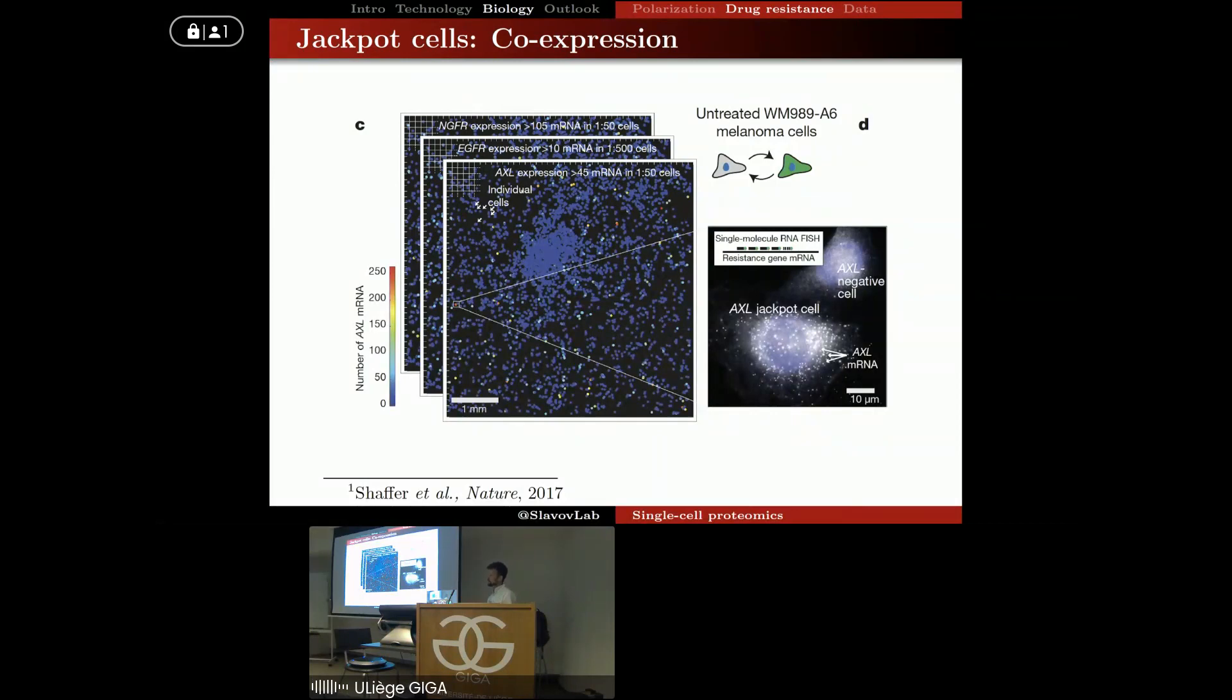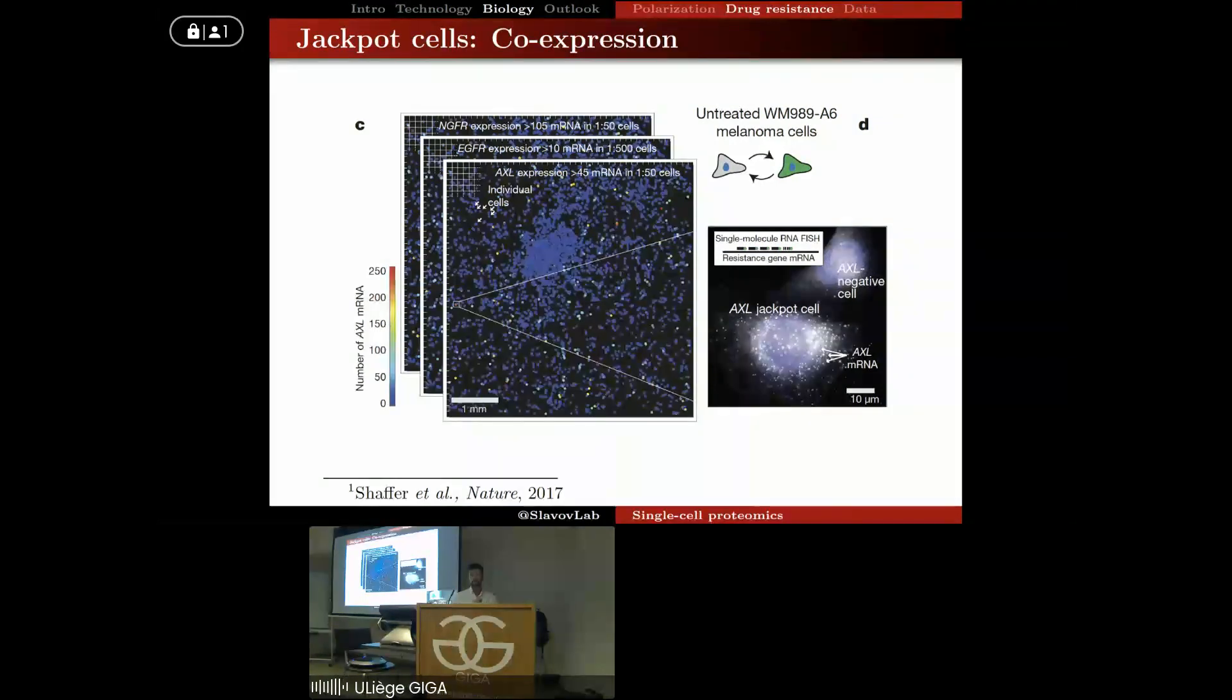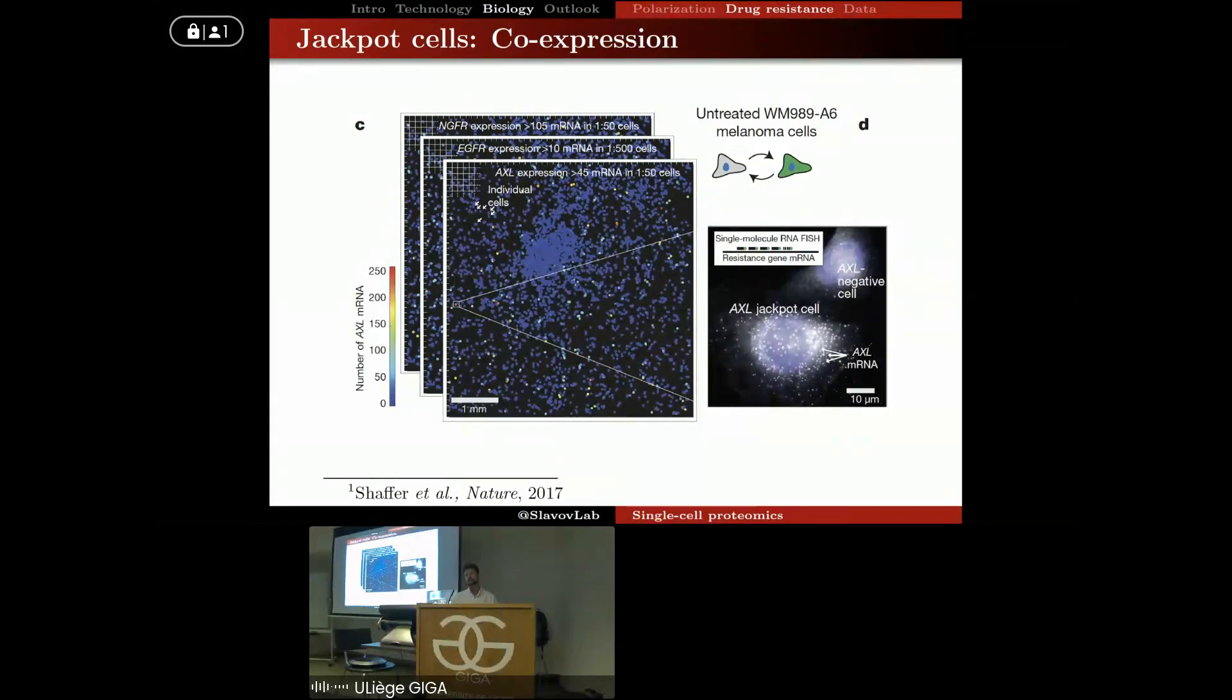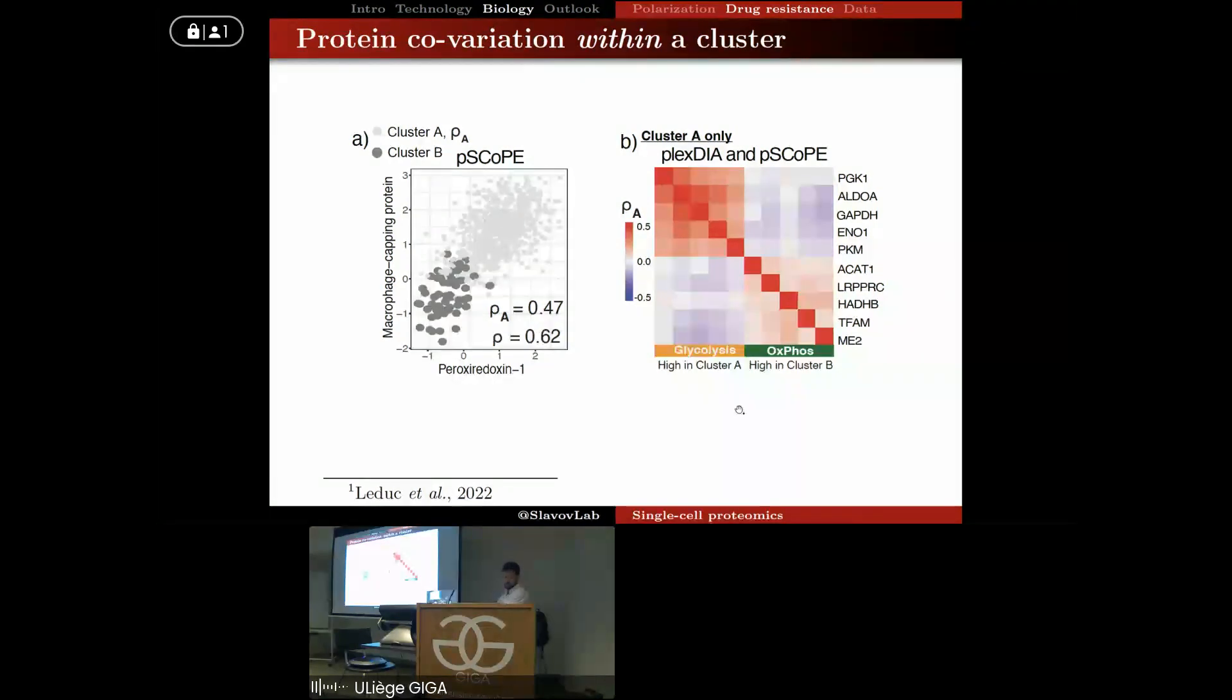So how about this jackpot co-expression? What has been found previously, very interesting with the emergence of drug resistance, is that there are these rare cells that have much higher abundance of particular transcripts associated with drug resistance developing. But they're so rare, very, very, very rare, that if you assume that this expression is completely uncorrelated between the marker genes, they would essentially not exist, these cells. So what previously Arjun Raj and others found is that there is co-expression of the drug resistance markers, and we wanted to test to what extent this also happens at the protein level and to what extent it happens not only between the primed and non-primed cells, but really does it happen within a cluster, not just across the clusters, but within.